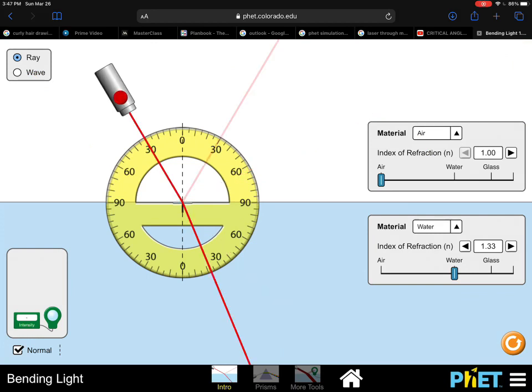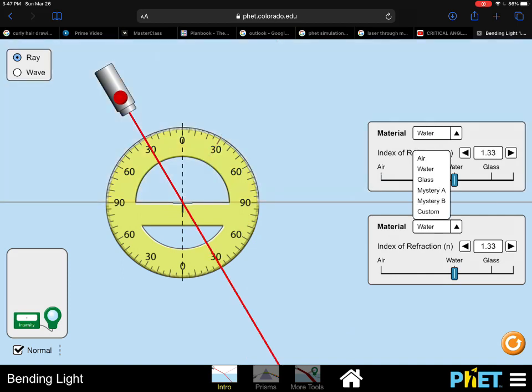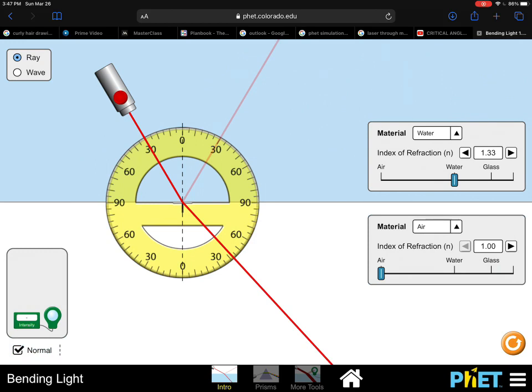Now, what happens when light goes from a denser medium to a less dense medium? Well, if we change the settings so that the light enters from water and leaves through air, we can notice that the light bends away from the normal line. Why is that?